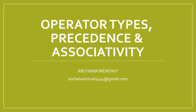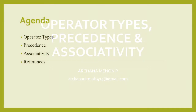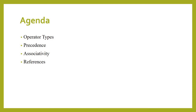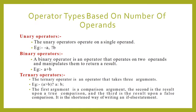Operator types, precedence, and associativity. Operators are divided based on the number of operands present in them. The different types of operators are unary operators, binary operators, and ternary operators.